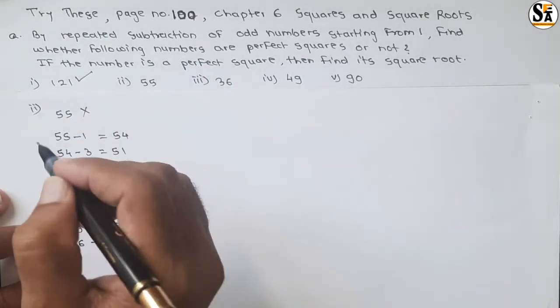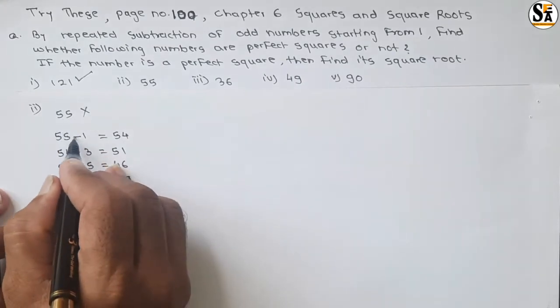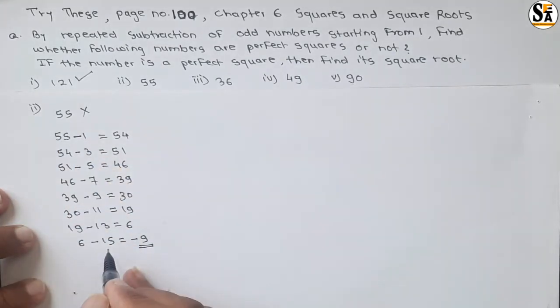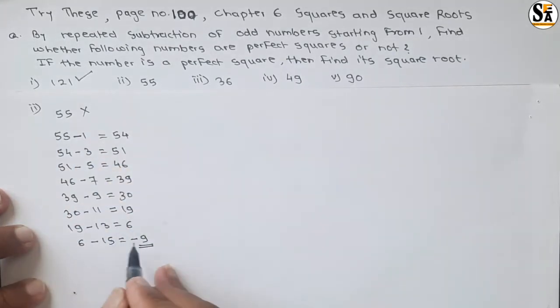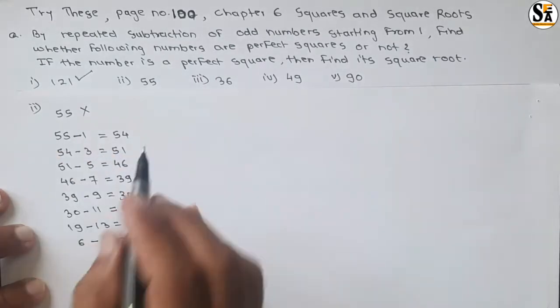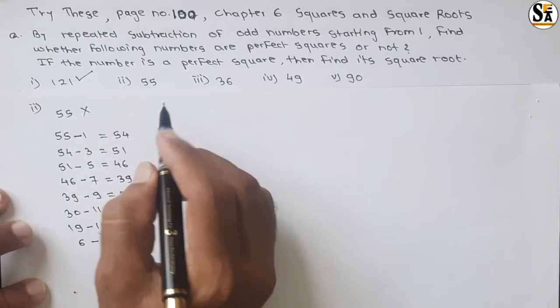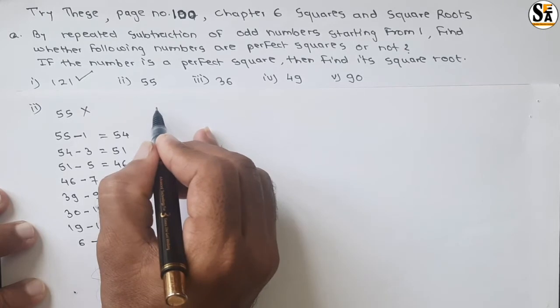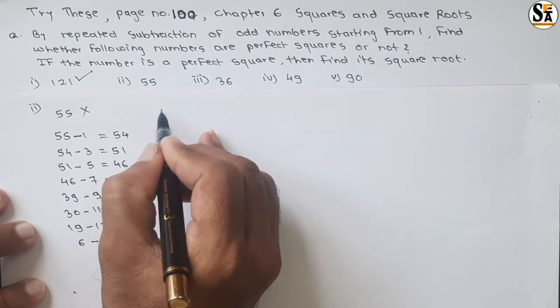Since we are subtracting odd numbers starting with 1 and we are not getting 0 — instead we get a negative value — 55 is not a perfect square. Now see the next number, 36.